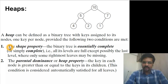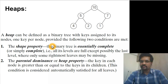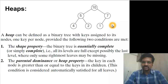First one is shape property which says the binary tree is essentially complete or simply complete. What does it mean? All its levels are full except possibly the last level where some rightmost leaves could be missing. In this case this is level 0, level 1, and level 2. Level 0 and level 1 are full. Level 2 which is the last level only one leaf is missing here. So this is an essentially complete tree.